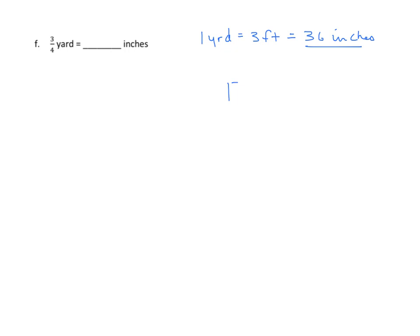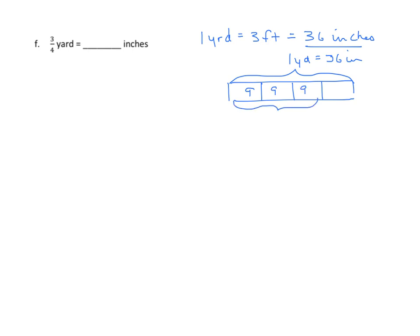We'll do the tape diagram first. We have one yard, which equals thirty-six inches, and we want three-fourths, so we partition it into four equal parts. Thirty-six divided by four is nine, so each part is nine. We want three-fourths, and three times nine equals twenty-seven, so the answer is twenty-seven inches.